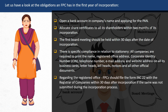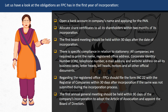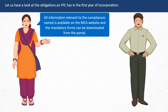Regarding the registered office, FPCs should file form INC-22 with the Registrar of Companies within 30 days after incorporation if it was not submitted during the incorporation process. The first Annual General Meeting should be held within 90 days of the company's incorporation to adopt the Articles of Association and appoint the Board of Directors. All information relevant to these compliances is available on the MCA website and the mandatory forms can be downloaded from the portal.